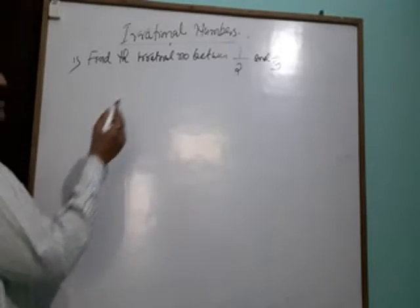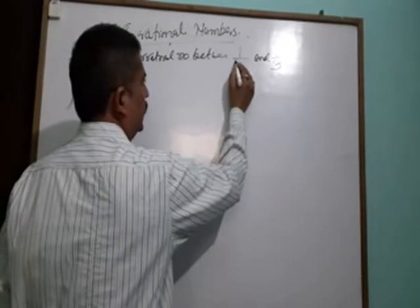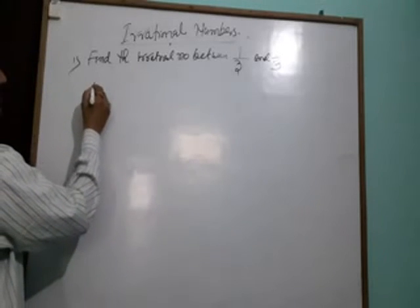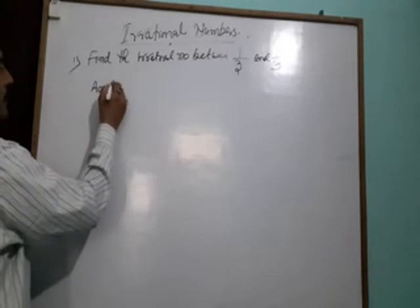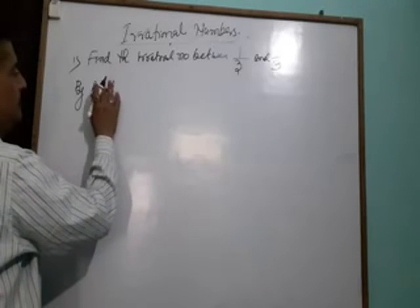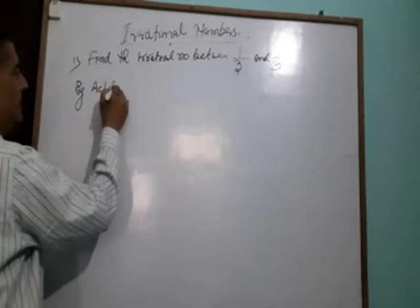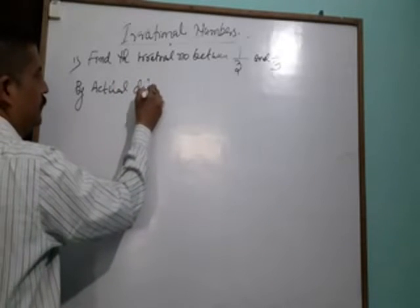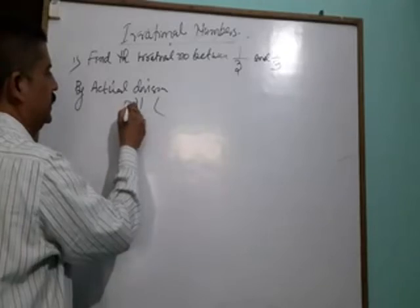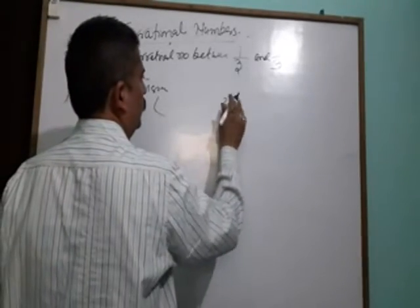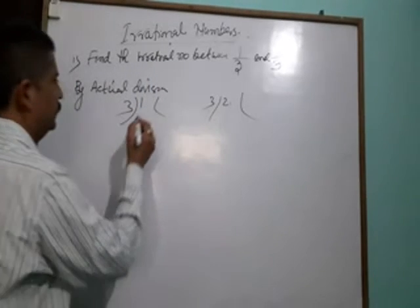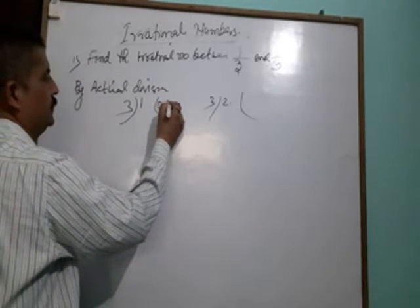Find the irrational numbers between 1 by 3 and 2 by 3. So first, by actual division: 1 divided by 3 and 2 divided by 3.